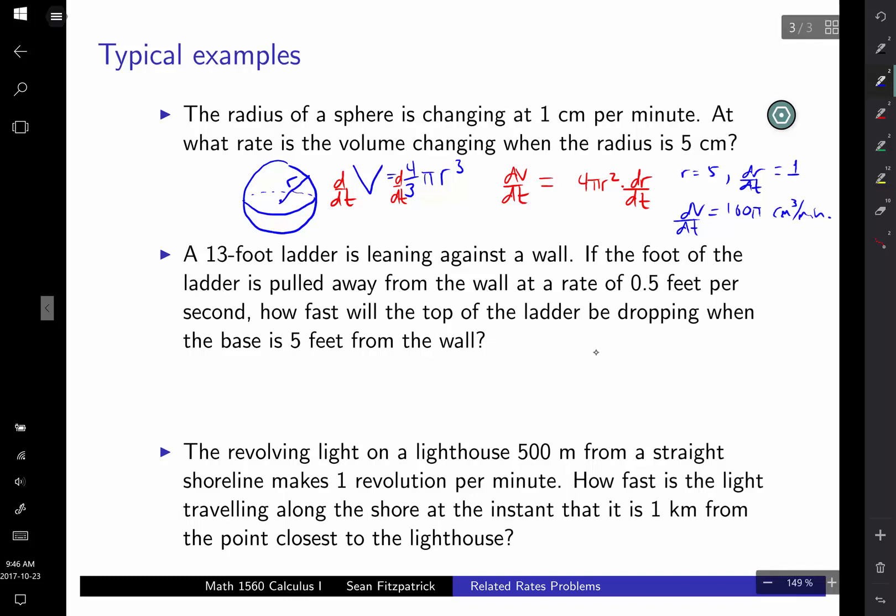The next one here, ladder against a wall, that's a pretty standard one. Here's your wall. Here's the ground. Here's your ladder. And what do we know in this case? We know the length of the ladder is 13. We know the length of the ladder is not going to change. The ladder is fixed in length. It's not going to suddenly get longer or shorter.